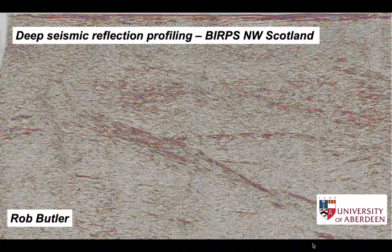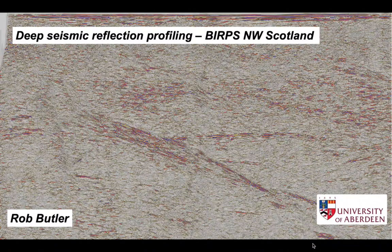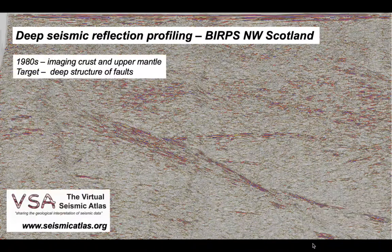Deep seismic reflection profiling has provided spectacular images of the continental crust, and some of the most spectacular came about through the BIRPS program in the 1980s. We're going to look at a few of these from northwest Scotland. All the images we're going to look at are on the Virtual Seismic Atlas.